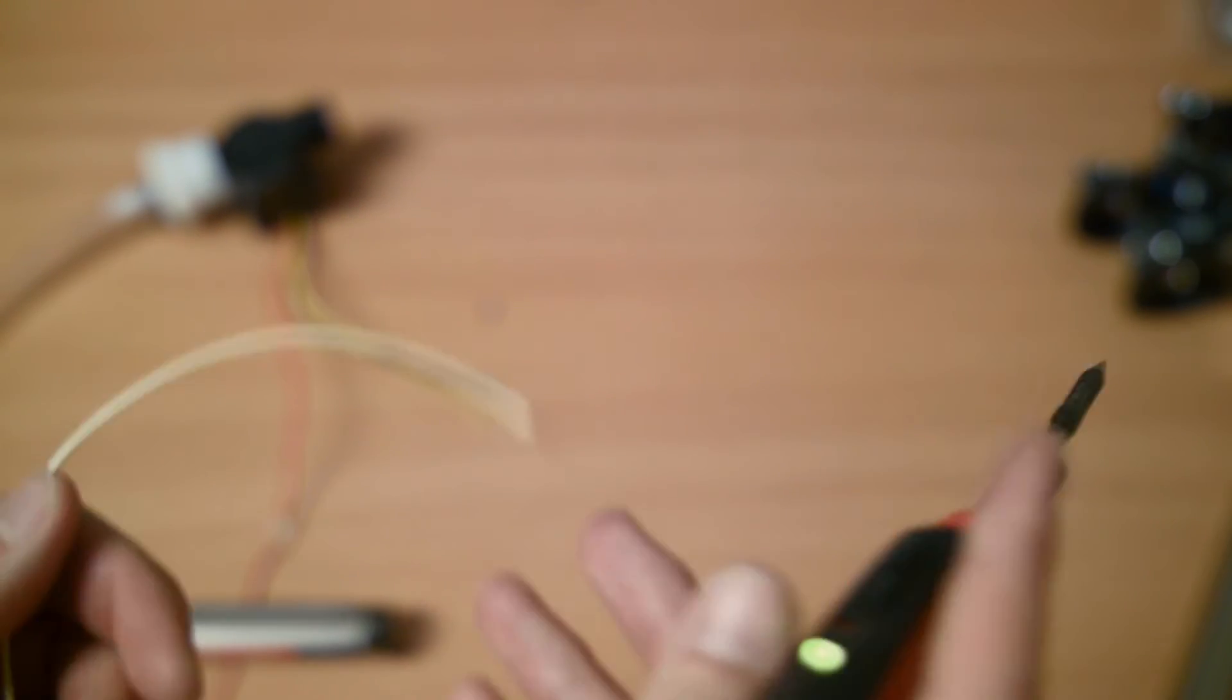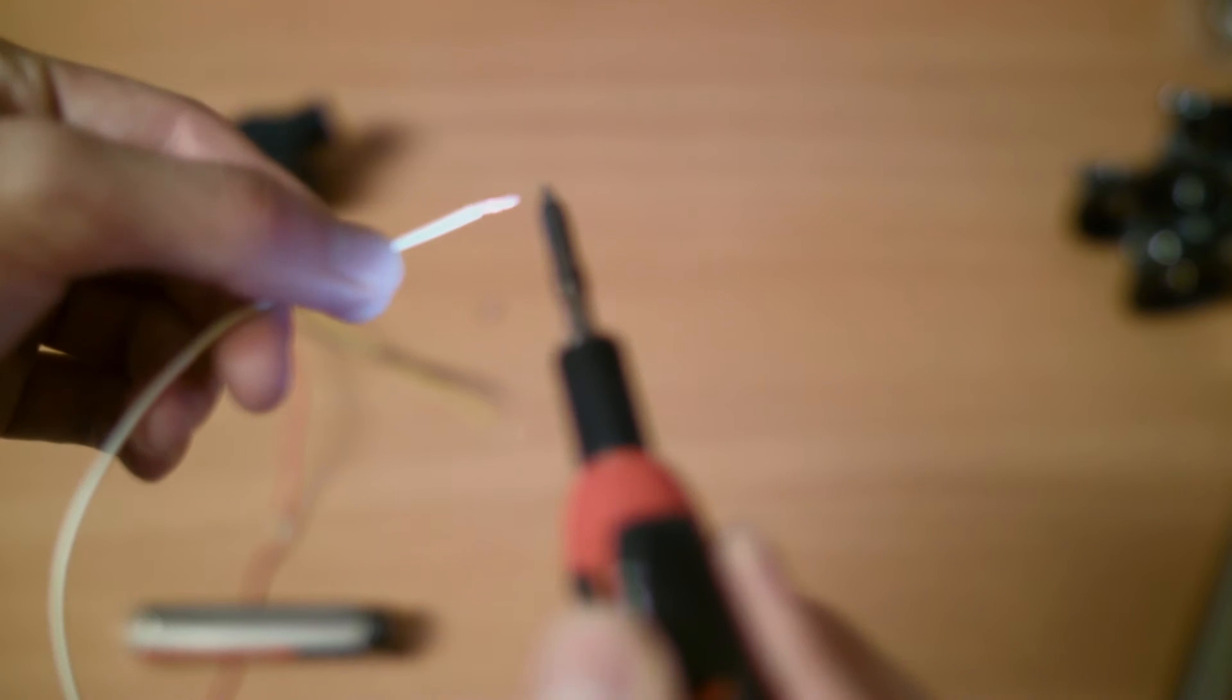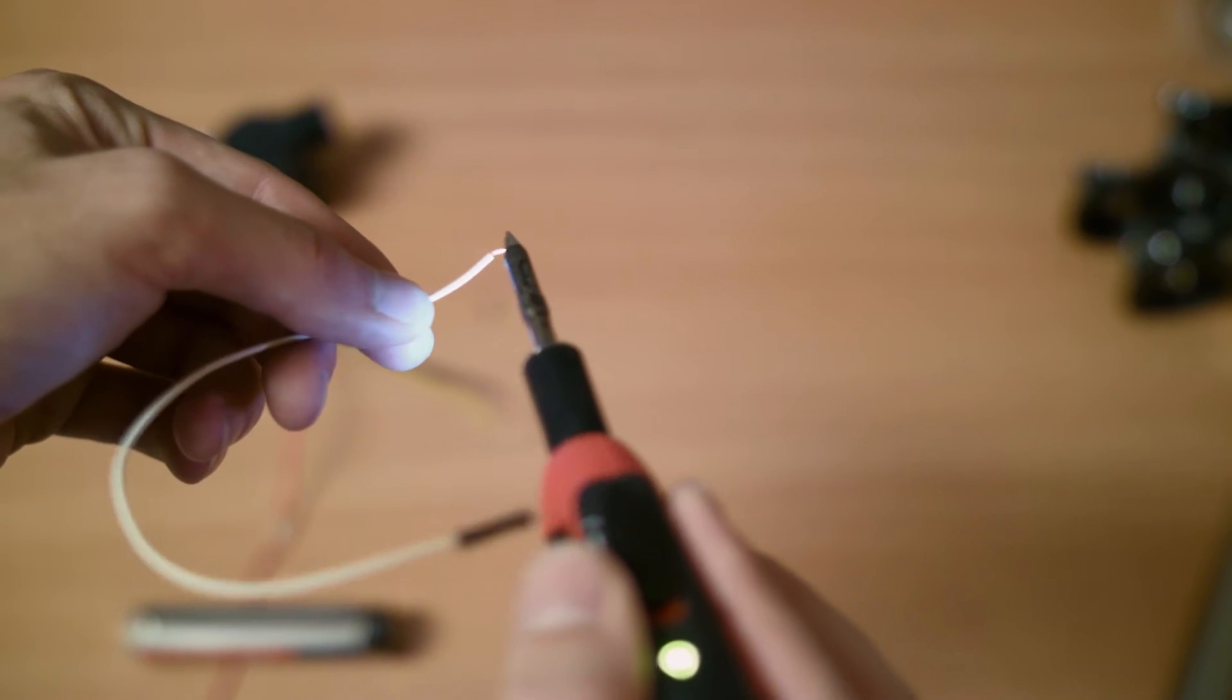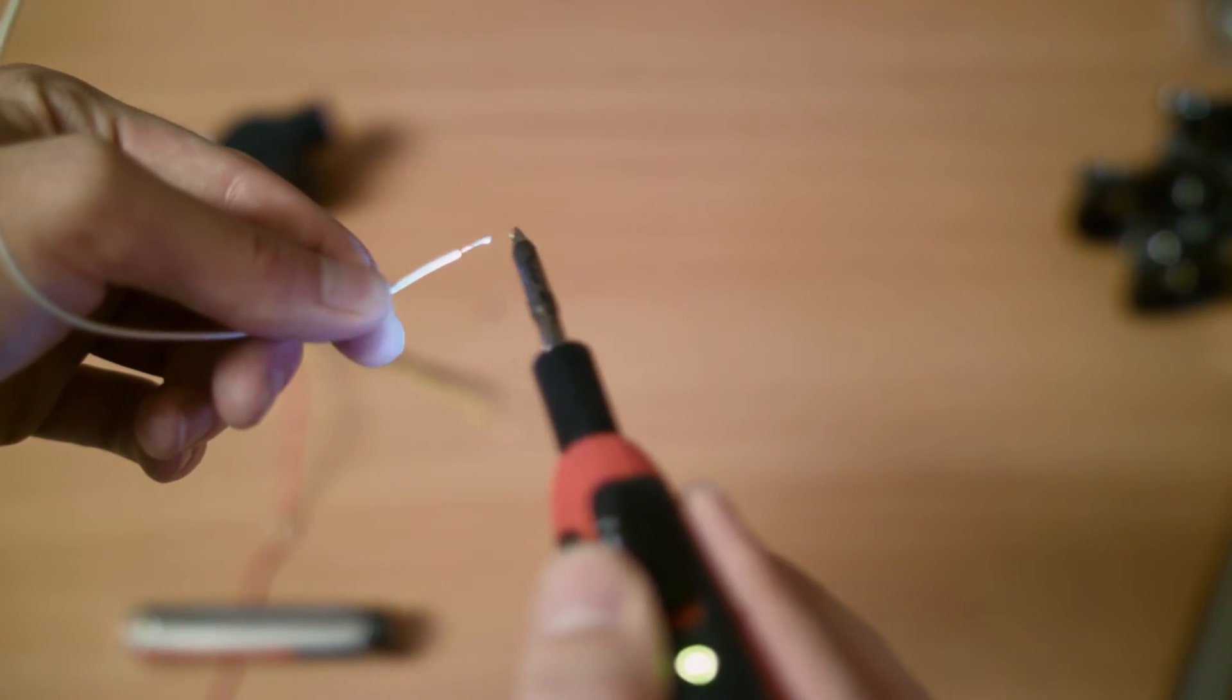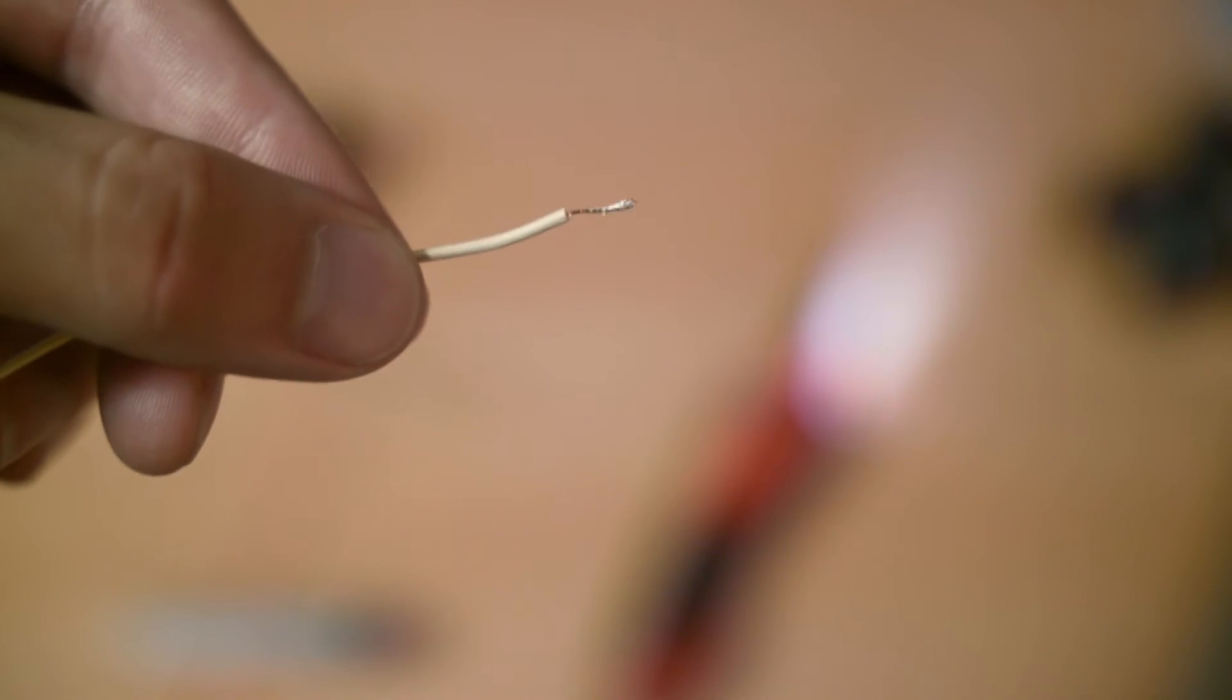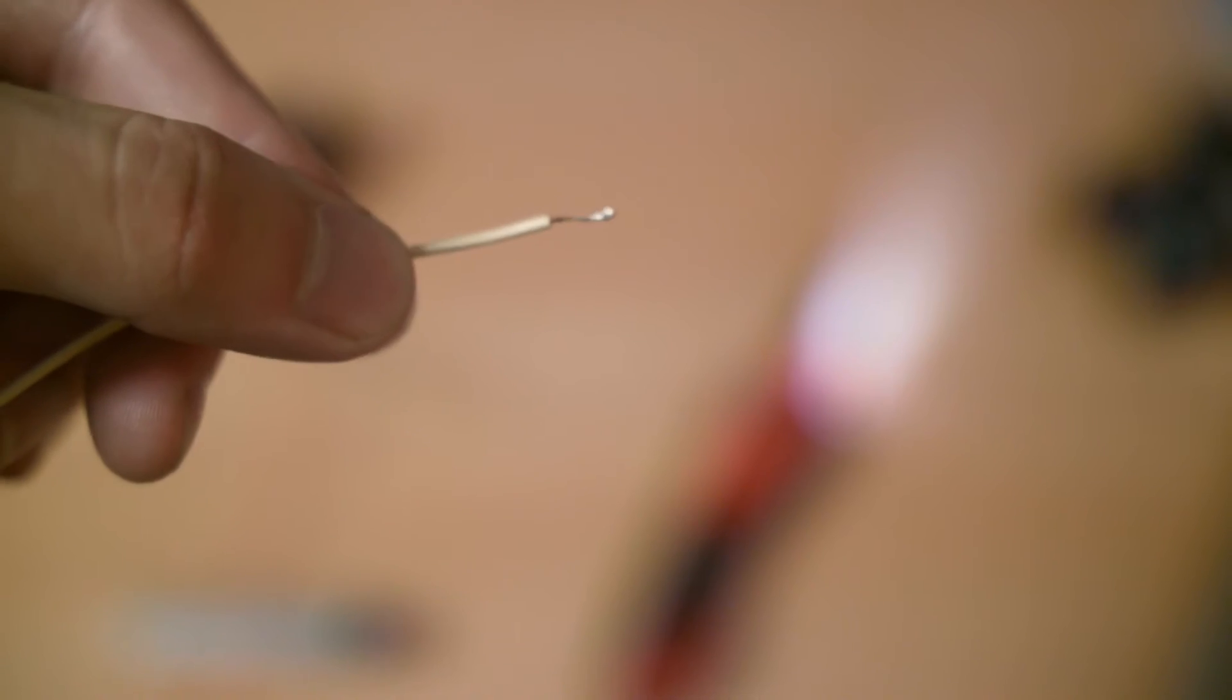Once you have that, basically just wet the end of this wire so it's kind of shiny. You can see the solder flow onto the wire. When it gets really shiny like that, you have a nicely soldered wire end.